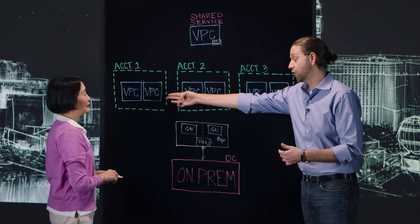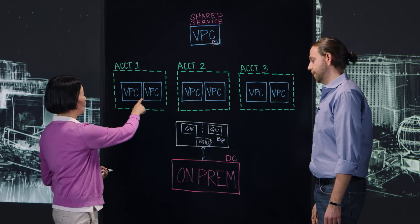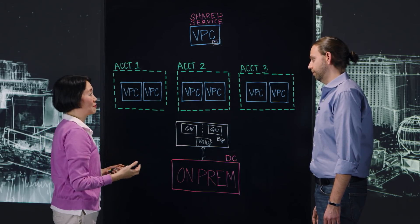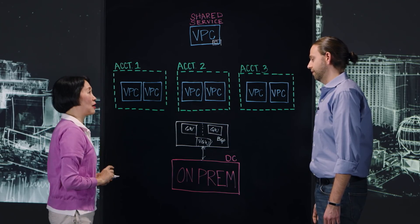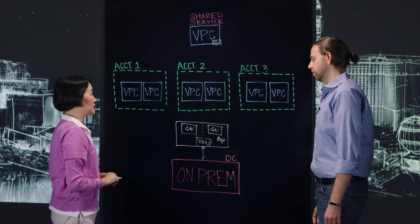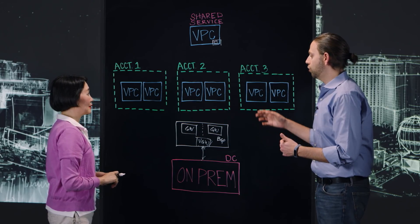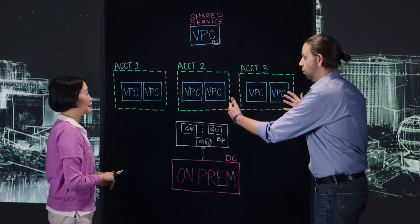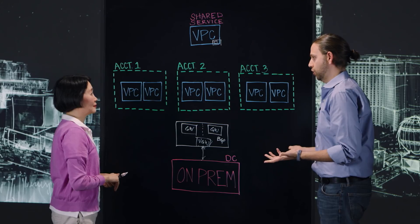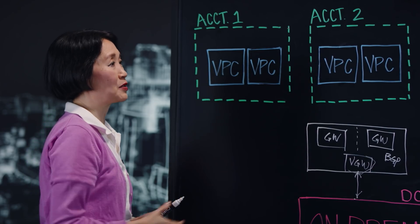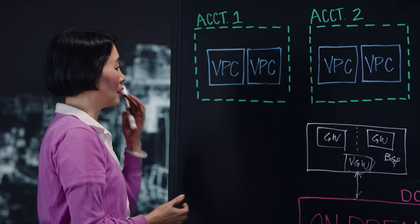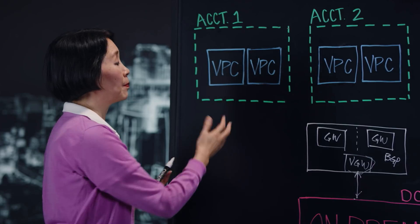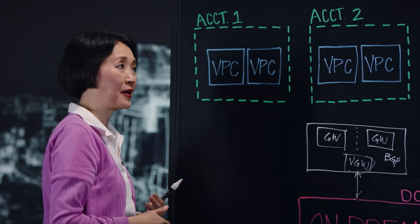You need to launch an Aviatrix gateway in each VPC where you want to build connectivity. These spoke VPCs do not run BGP, which has a few advantages. The connectivity between gateways is policy-driven — you get to select specifically who talks to whom. Connectivity is by design, not by default.